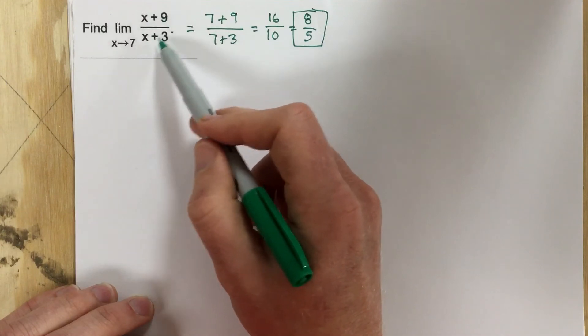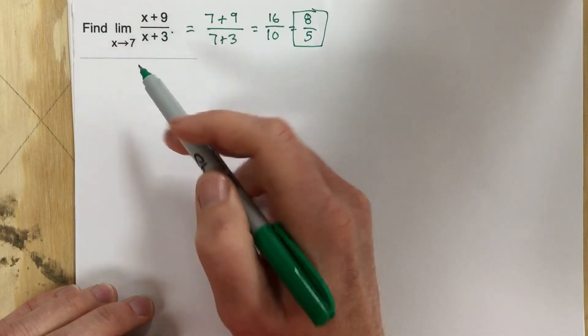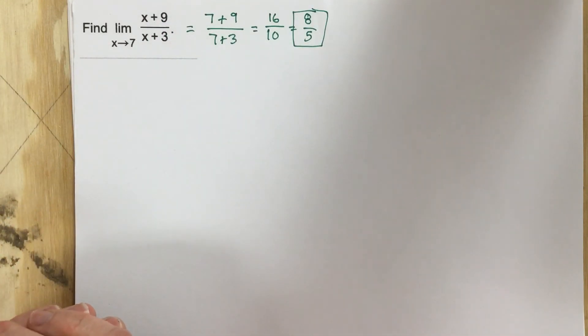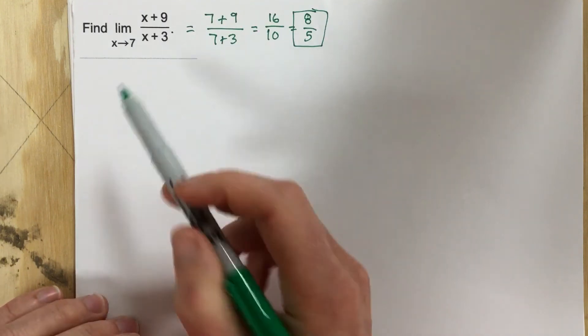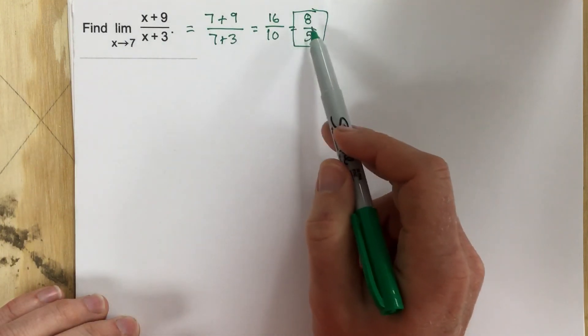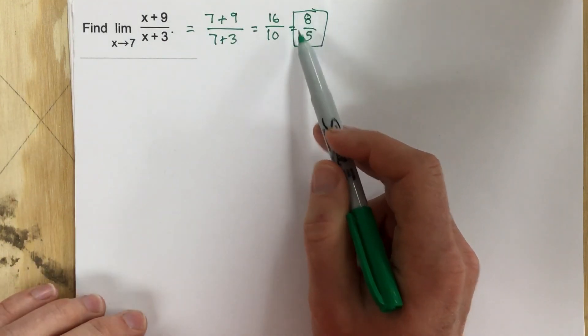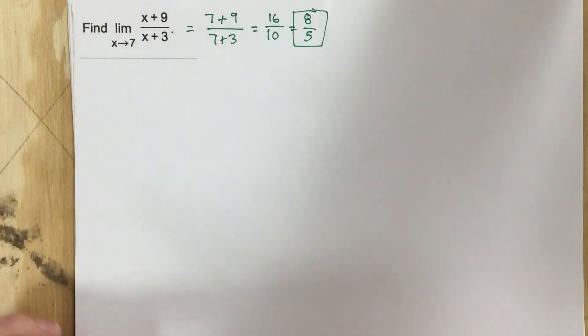We don't have to do any algebraic manipulation with this function because it's already defined at x equals 7. So we can just plug it in and find that the function is approaching 8 over 5 as x approaches 7.